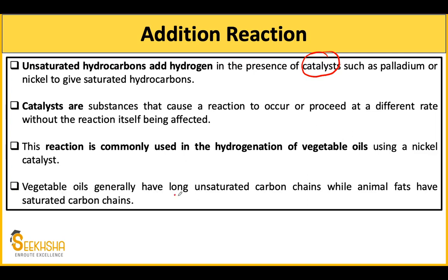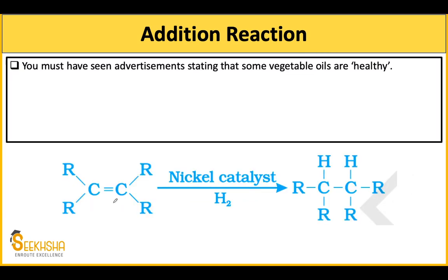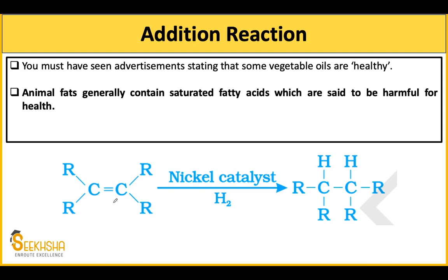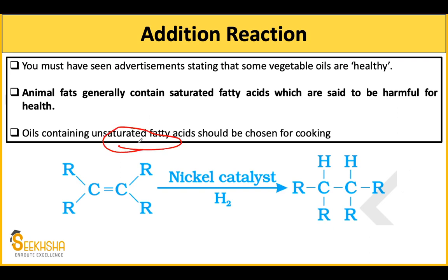Vegetable oils generally have long unsaturated carbon chains while animal fats have saturated carbon chains. When advertisements say vegetable oil is healthy, it means cooking oil has unsaturated fatty acids. Animal fats have saturated fatty acids which are harmful for health — saturated fatty acids are not advisable for consumption. This is an additional health fact you learn from this topic.